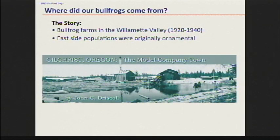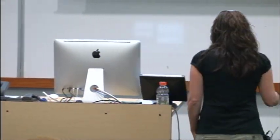Now we have all these resident populations throughout the lowlands. We don't find them on the east side that much — rarely above 1,000 feet. The local lore on the east side is that the Gilchrist Timber Company, which started in 1938, was founded by people from Mississippi. When they came up to start their timber company, they built a mill pond and stocked it with species from Mississippi, including bullfrogs. There are still active bullfrog farms, not necessarily in Oregon, but around the world — and that's what's propagating invasion ranges in China and South America.